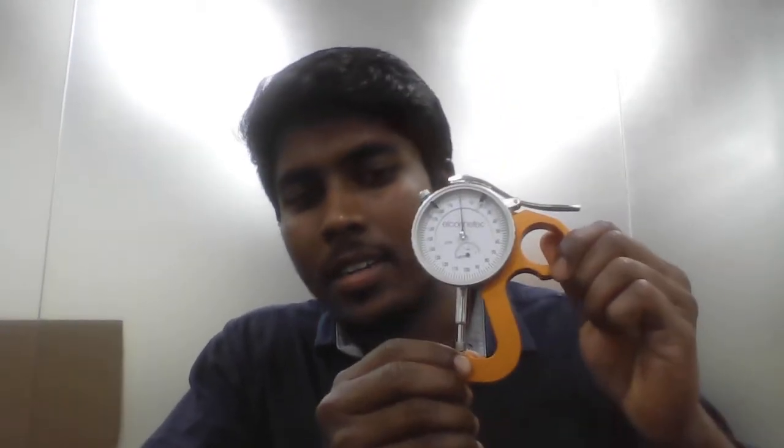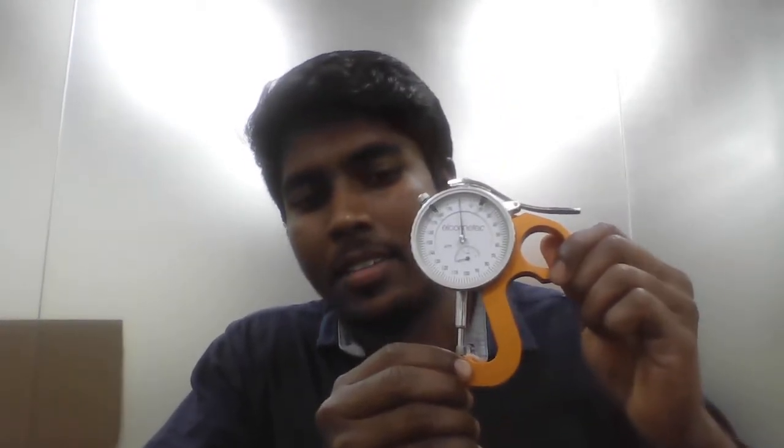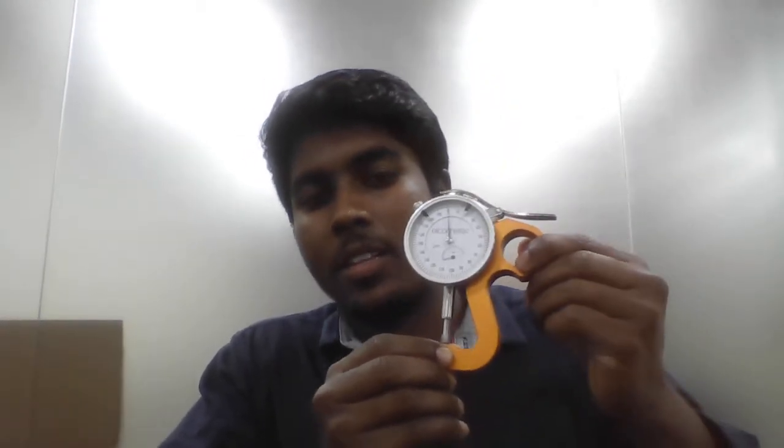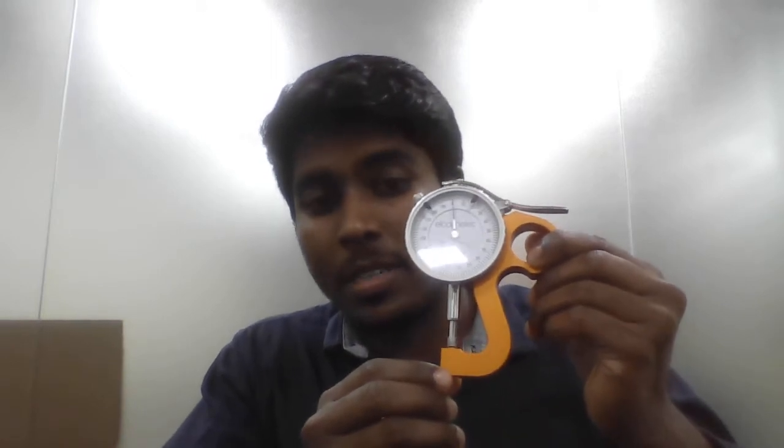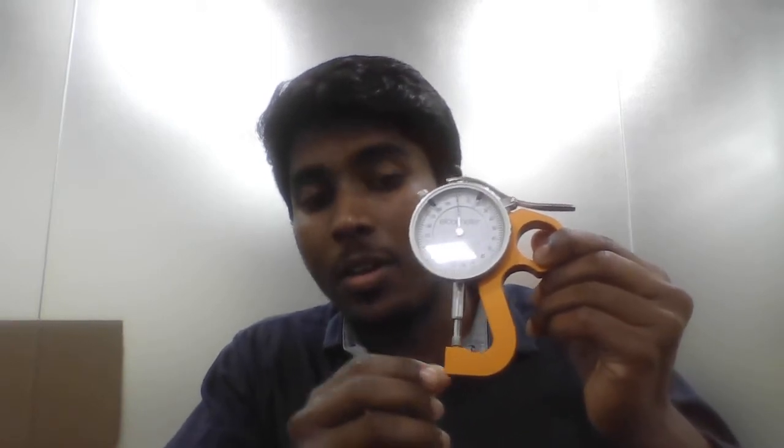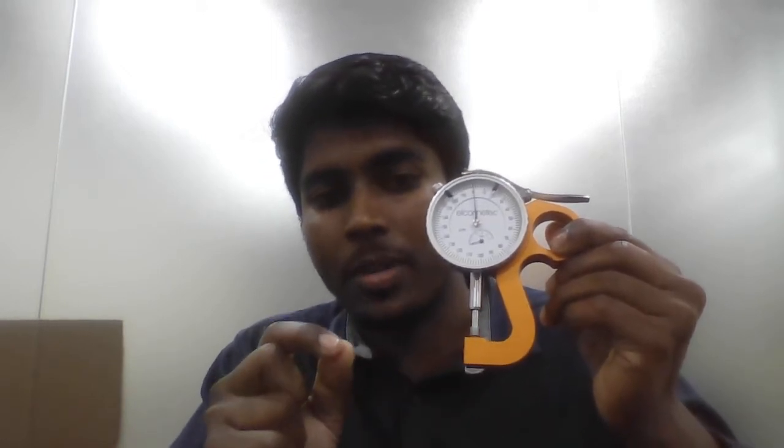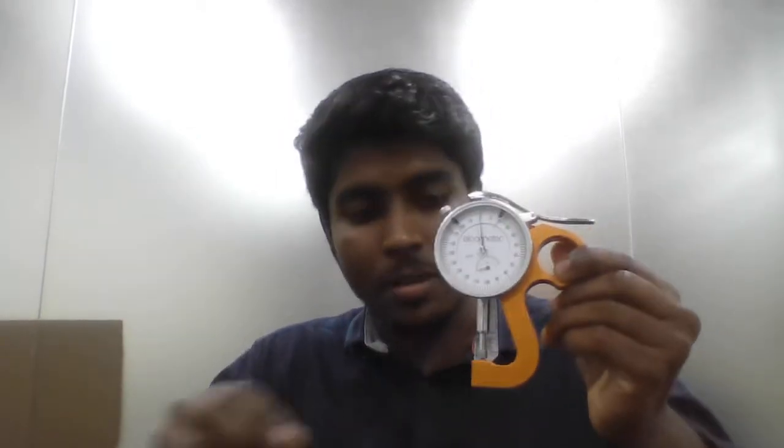This is the dial indicator. The purpose of this indicator is to measure the surface profile of glass surfaces, by using a replicator.